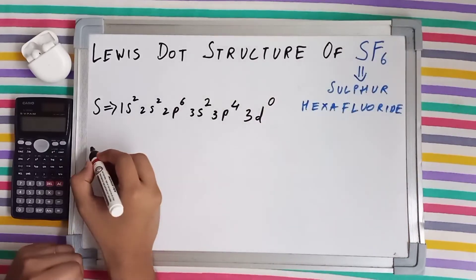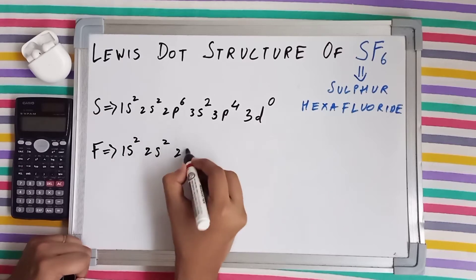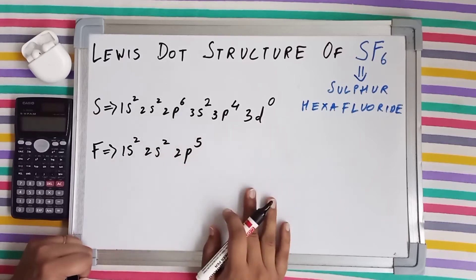Now let's talk about the electronic configuration of fluorine. It is 1s², 2s², 2p⁵.